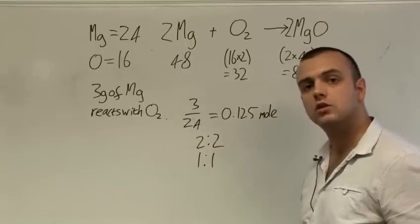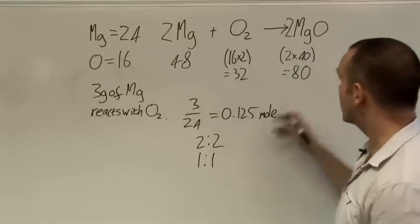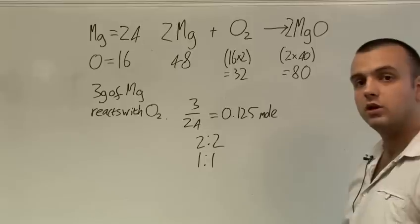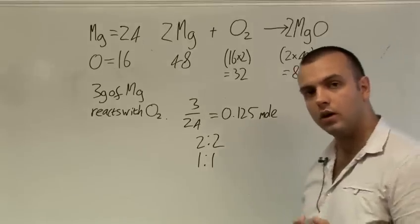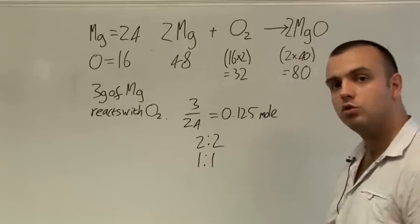What is the mass of 1 mole of magnesium oxide? We worked that out earlier. It's 24 plus 16 is 40 grams. So 1 mole has a mass of 40 grams. However we've just seen that we only have 0.125 moles.